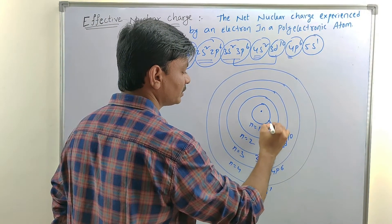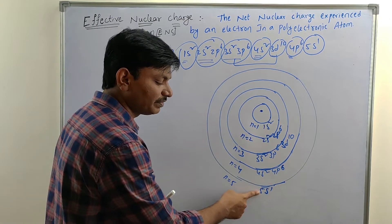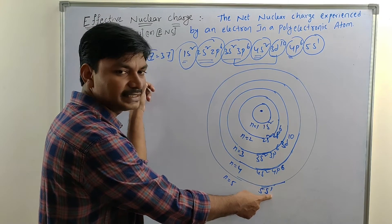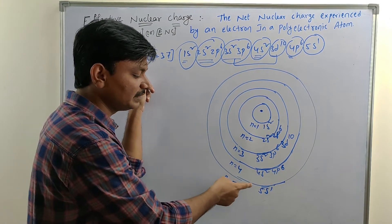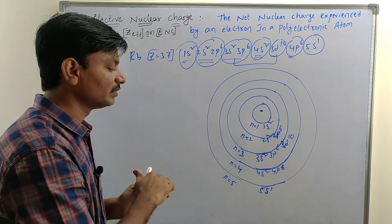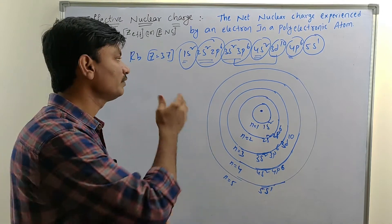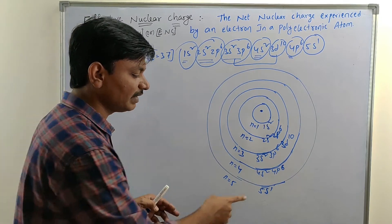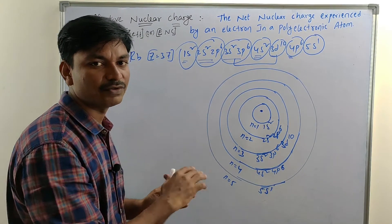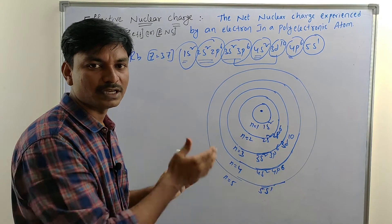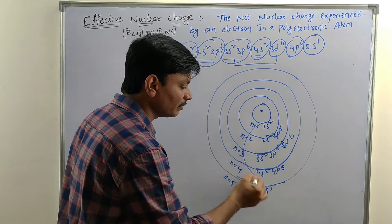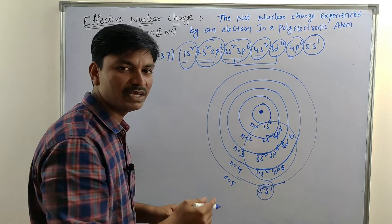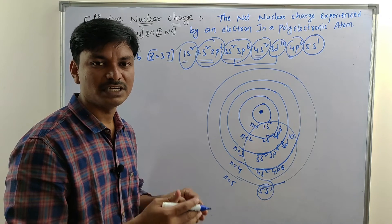The 5th shell is the valency shell of rubidium, and the 5s1 electron is the valency electron. This valency shell is also called the ultimate shell of rubidium. The 4th shell is the penultimate shell, and the 3rd shell is the anti-penultimate shell. The remaining electrons in inner shells are inner core electrons of rubidium.